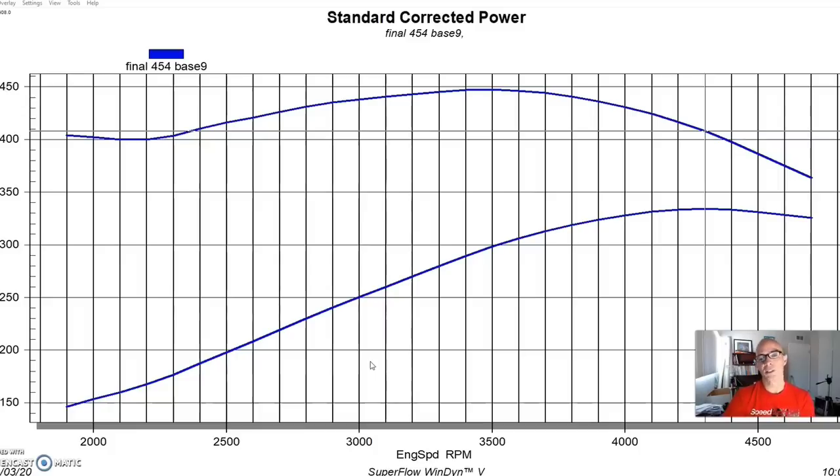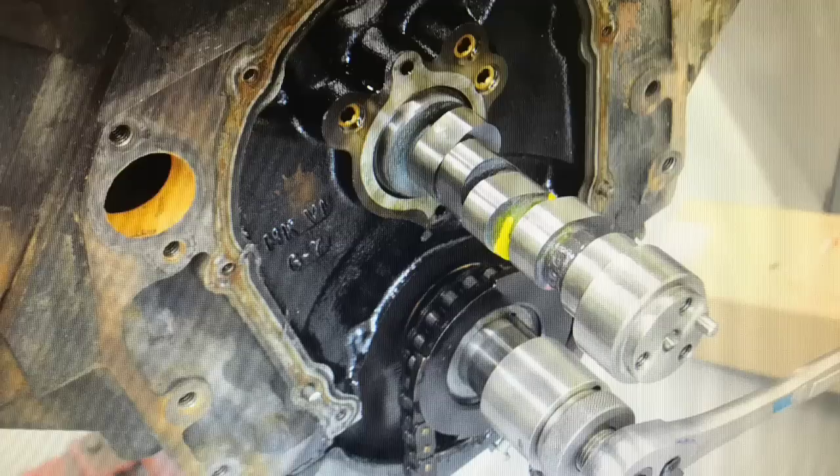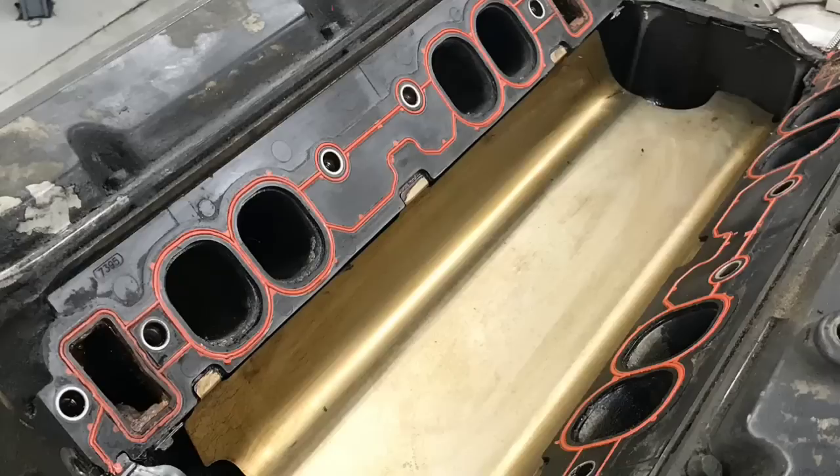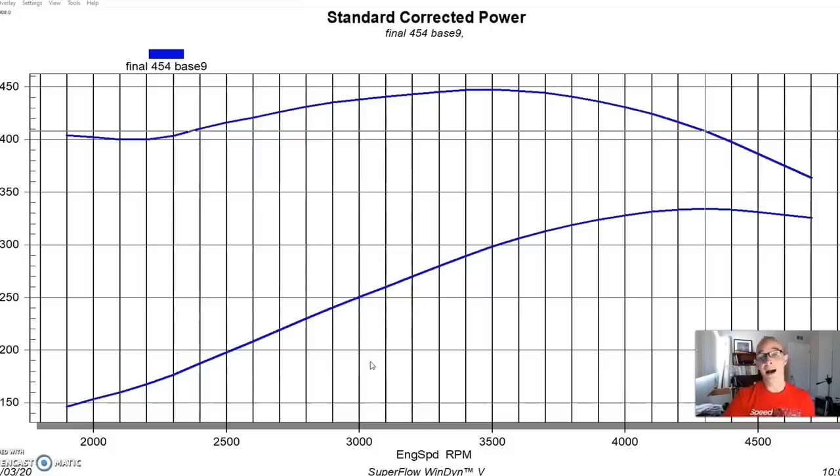One of the other reasons I look for the Gen 6 stuff is it's a factory hydraulic roller cam, which I prefer. We can go with a little more aggressive profile. I like the hydraulic roller stuff, it just seems to work out better. Also the Gen 6 has a much better cylinder head on it than the Gen 5.